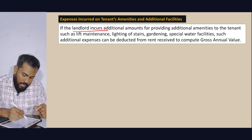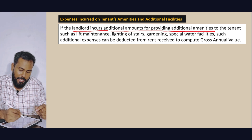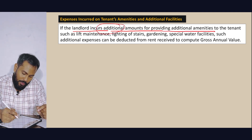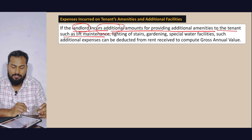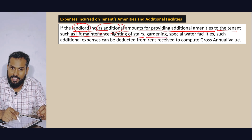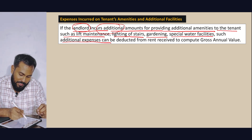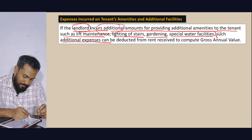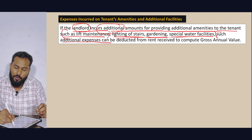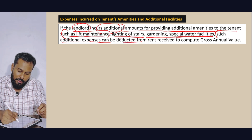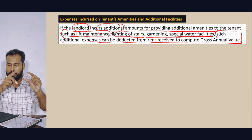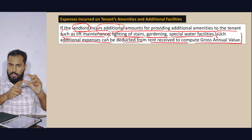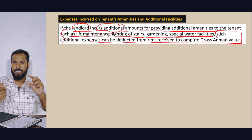If the landlord incurs additional amounts for providing amenities to the tenant — such as lift maintenance, lighting of stairs, gardening, special water facilities — such additional expenses can be deducted from Income from House Property.